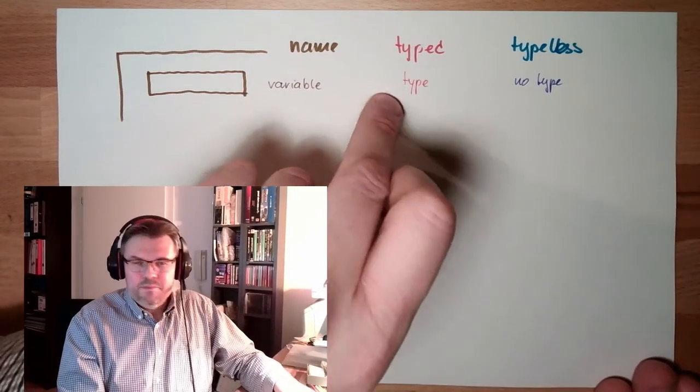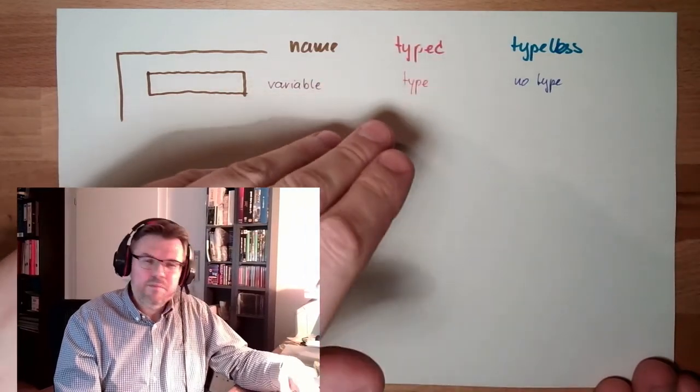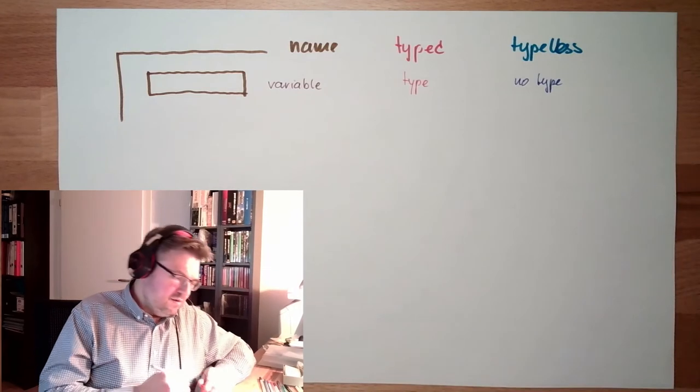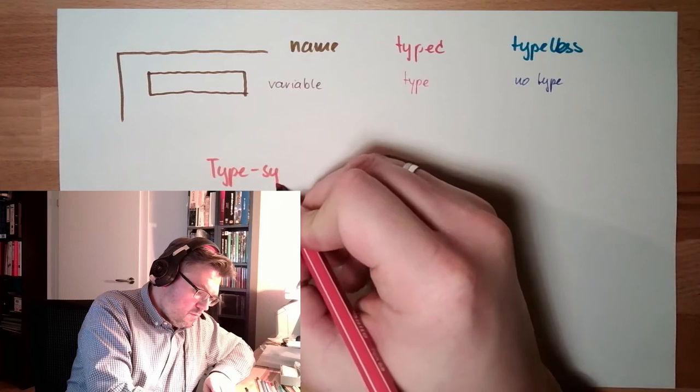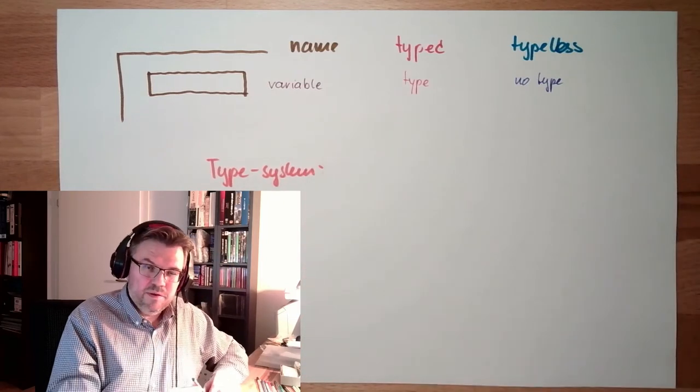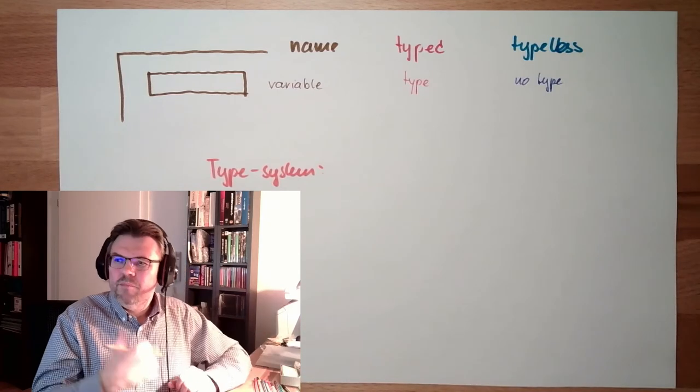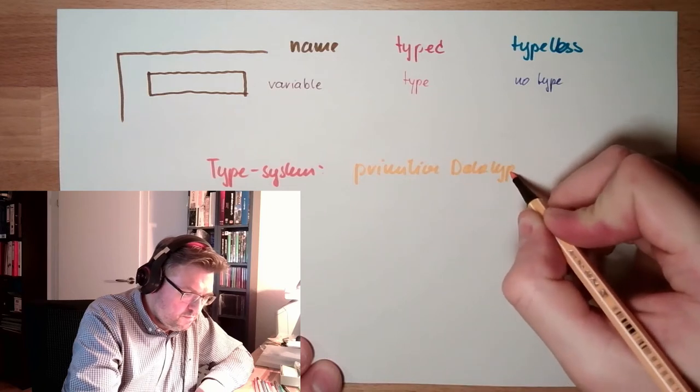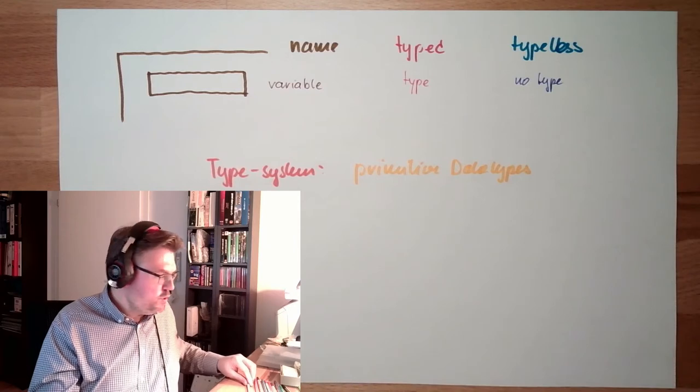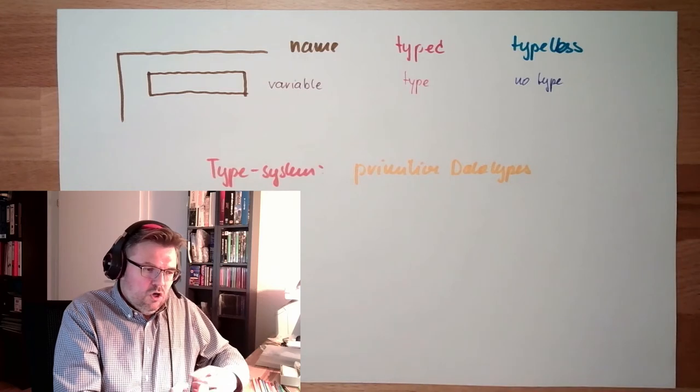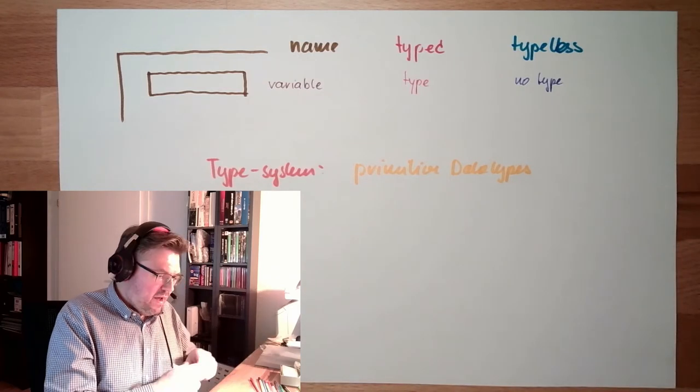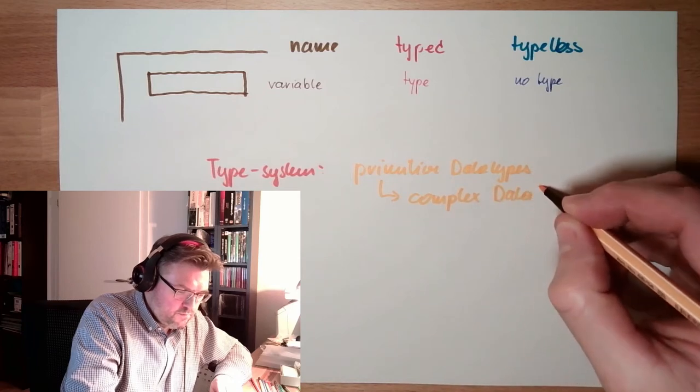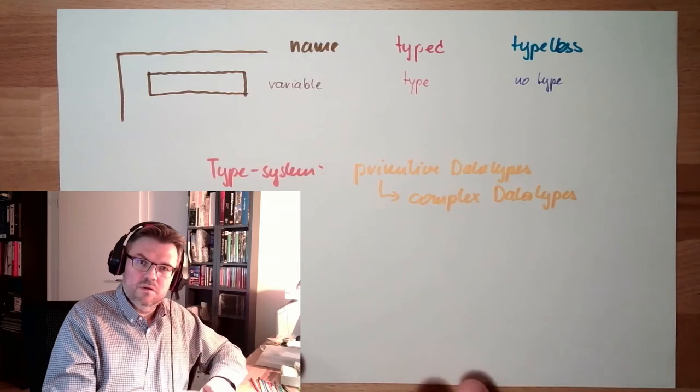Usually we're going to use typed programming languages. What do type systems do? Usually you have the possibility to use primitive data types - built-in types natively understood by the programming language. By combining such primitive data types to complex data types, we can produce our own new data types.